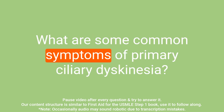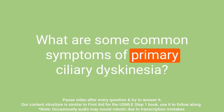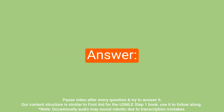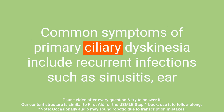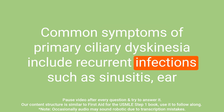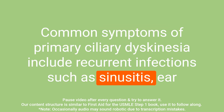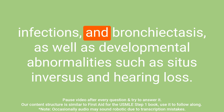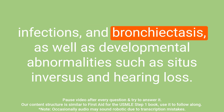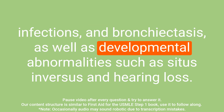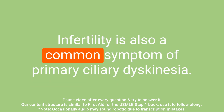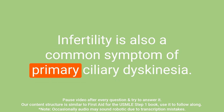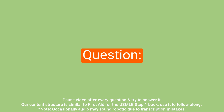Question: What are some common symptoms of primary ciliary dyskinesia? Answer: Common symptoms include recurrent infections such as sinusitis, ear infections, and bronchitis, as well as developmental abnormalities such as situs inversus and hearing loss. Infertility is also a common symptom.